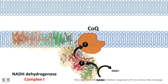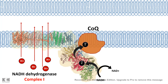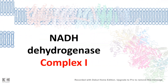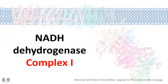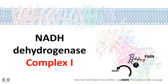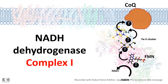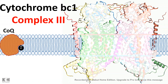Coenzyme Q is a mobile electron carrier which transfers the electron to the next complex. Looking at the detailed structure of NADH dehydrogenase, there is a membrane-bound region and a region protruding into the matrix. NADH is converted to NAD+; the ejected electron first goes to a flavin mononucleotide center, then moves through at least seven iron-sulfur clusters, and is then transferred to coenzyme Q. Coenzyme Q diffuses through the membrane and carries the electron to the next complex — the cytochrome BC1 complex.